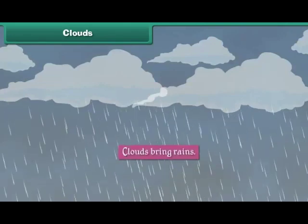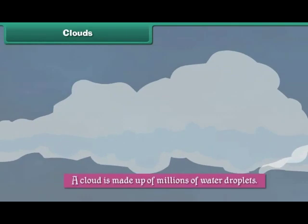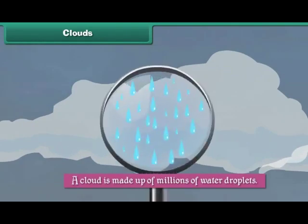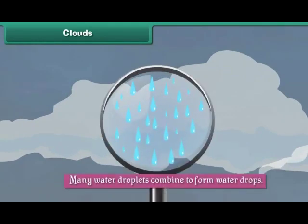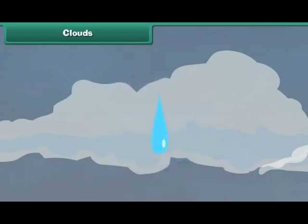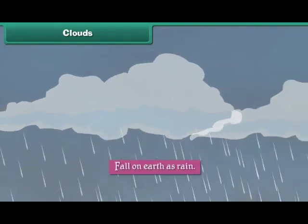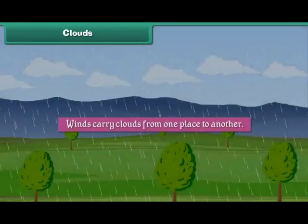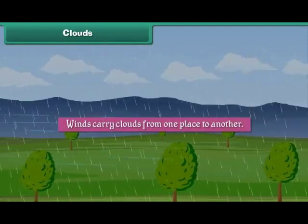Clouds bring rains. A cloud is made up of millions of water droplets. Many water droplets combine to form water drops. As the drops grow in size, they become heavy and fall on earth as rain. Winds carry clouds from one place to another.